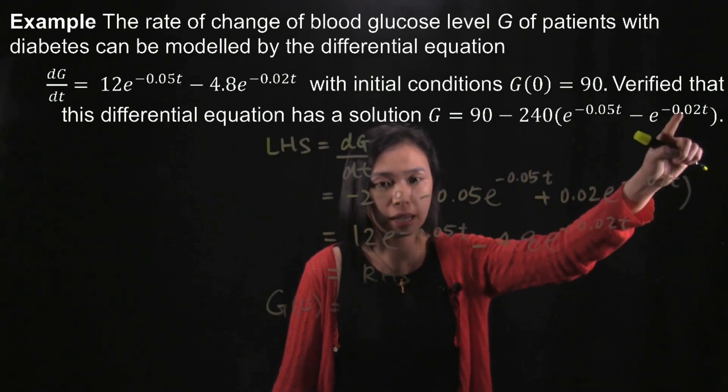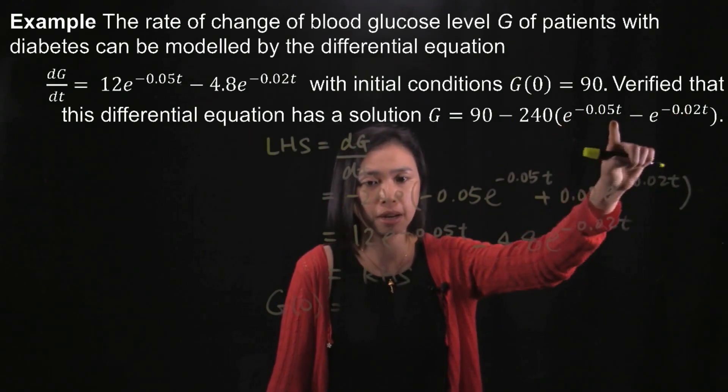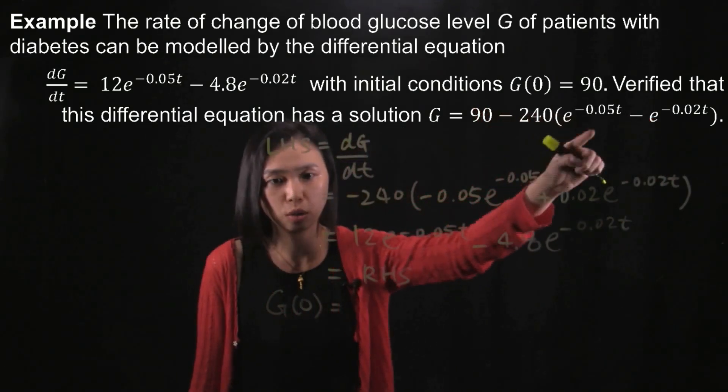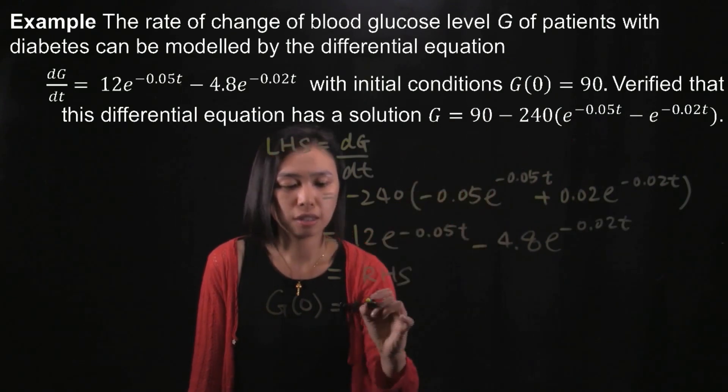1 minus 1 is 0. Multiplied by negative 240, you get 0. So at the end you will get 90.